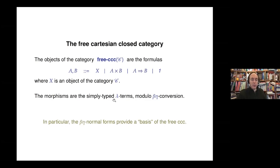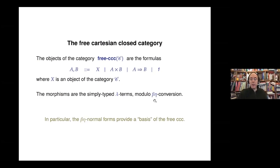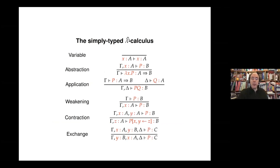The morphisms in this category are lambda terms. Lambda terms are terms in the lambda calculus, a pure calculus of functions. These terms should be considered modulo beta-eta conversion, and the situation is very similar to knot theory where we have tangled diagrams considered up to deformation of diagrams — typically Reidemeister moves.